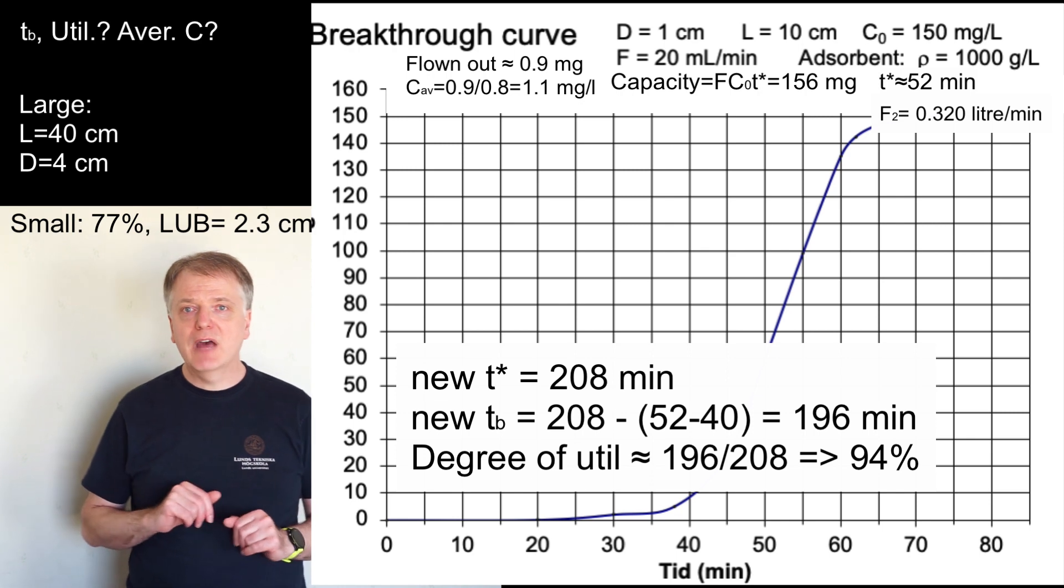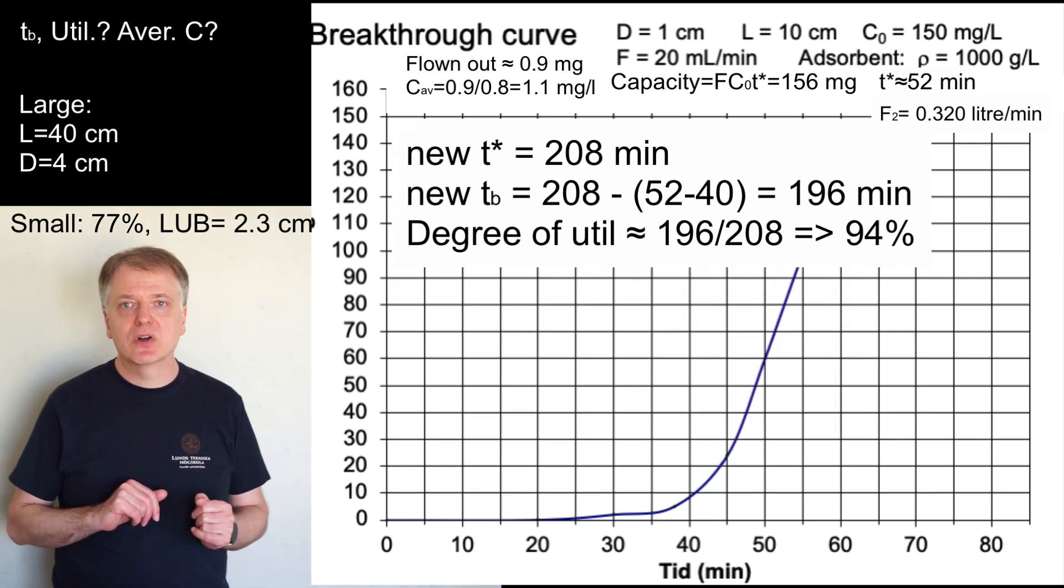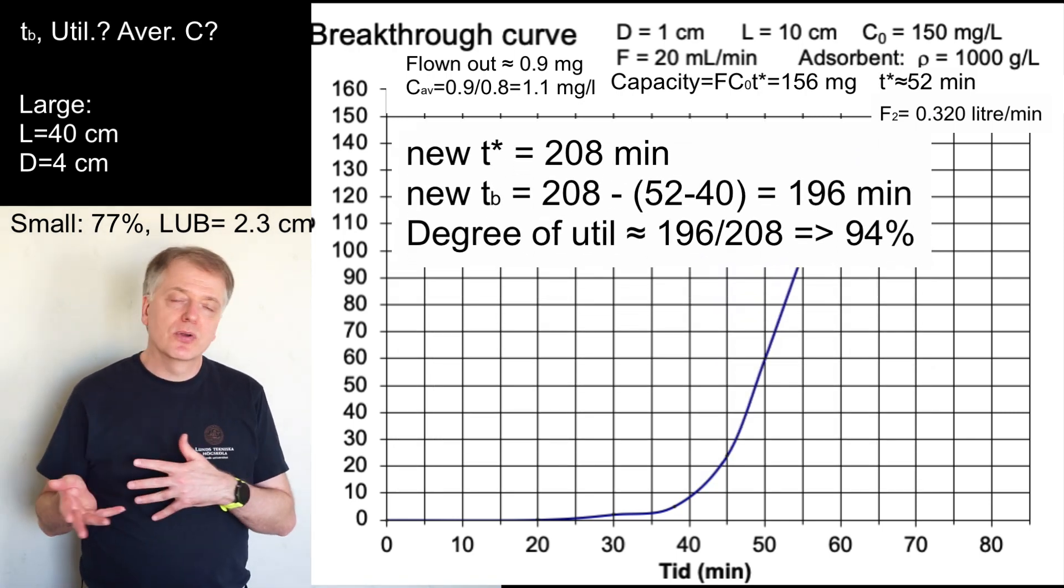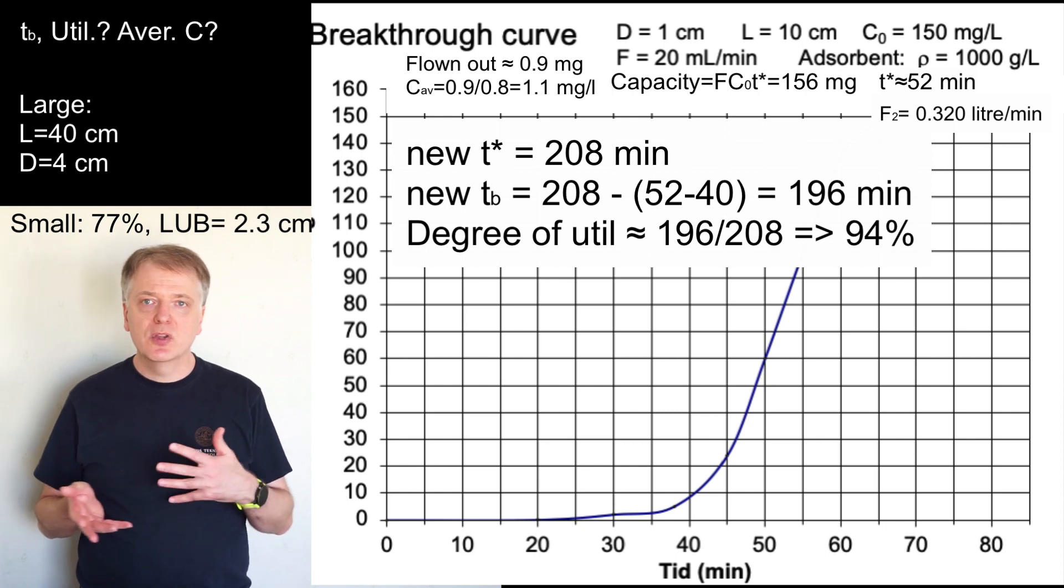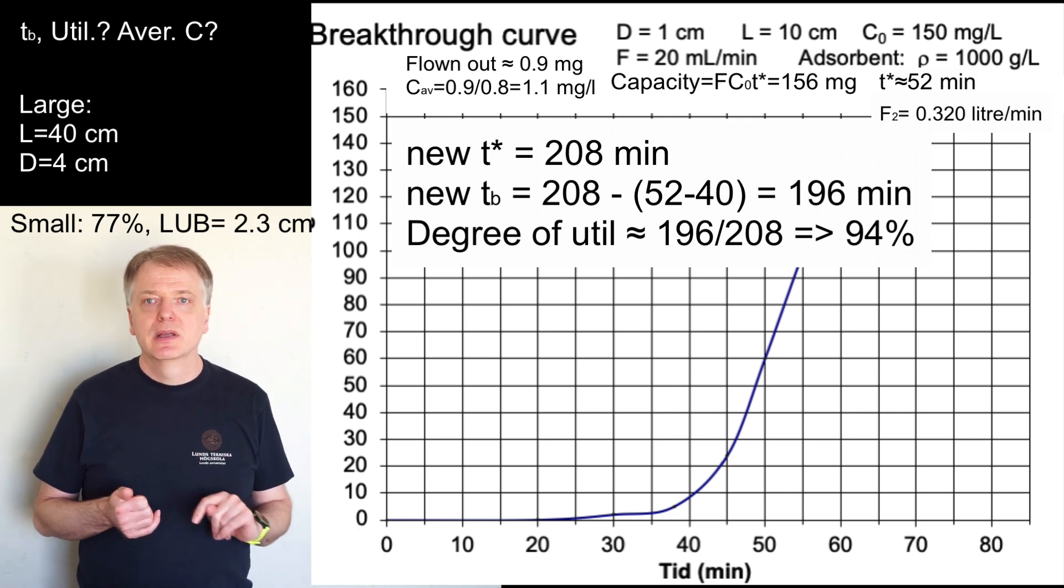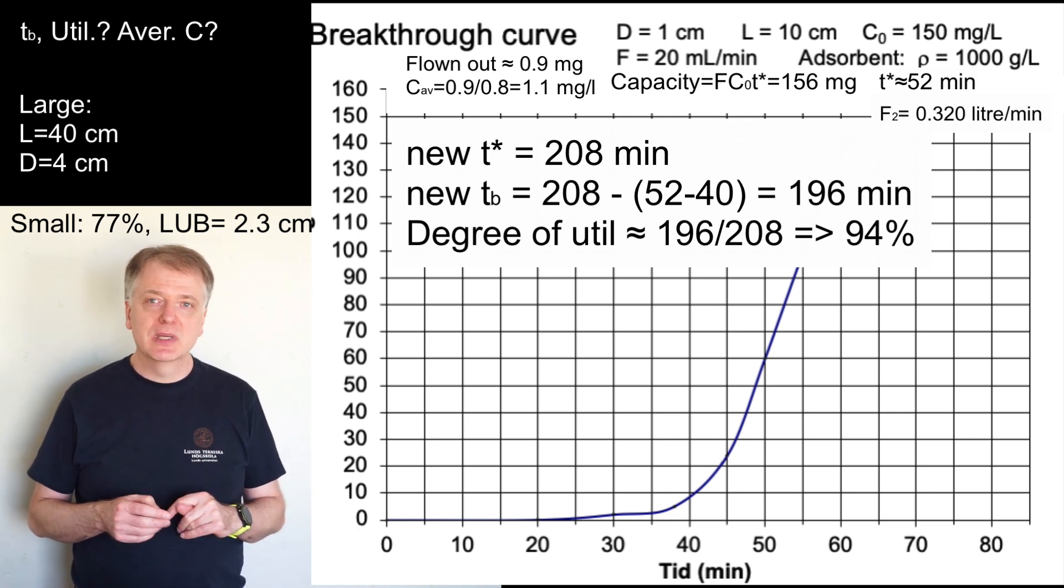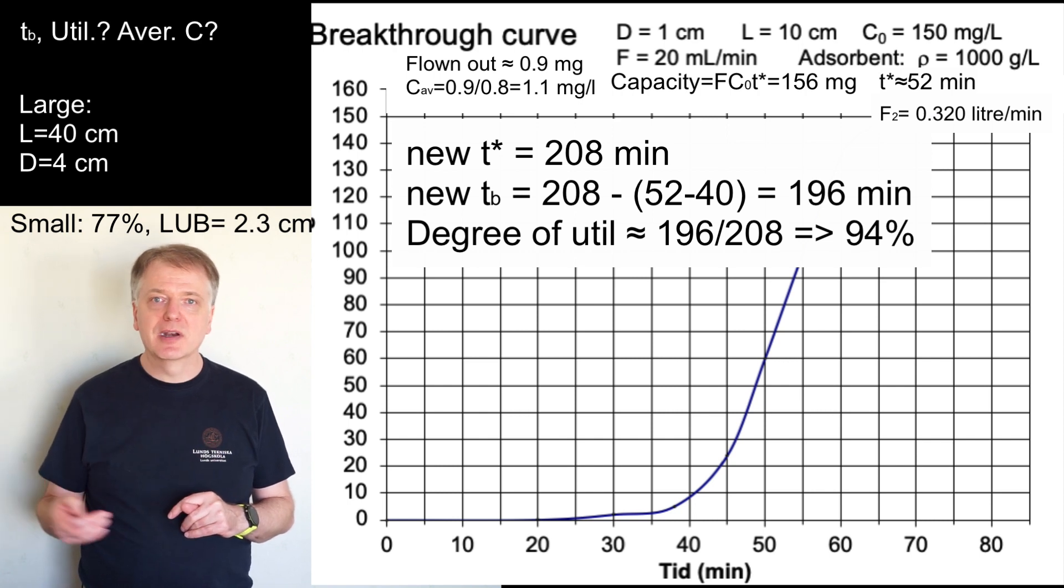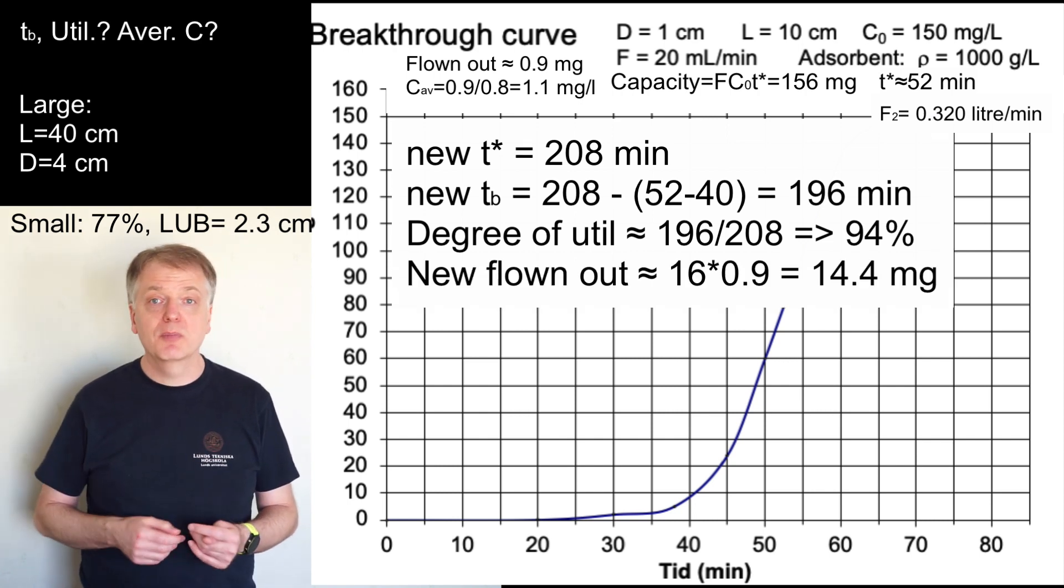But we were interested in the average concentration also in the large column. Since the breakthrough curve looks the same the area on the breakthrough curve remains the same but we have to multiply with a new flow that is 16 times larger so thus we get 16 times 0.9 milligrams which is 14.4 milligram.